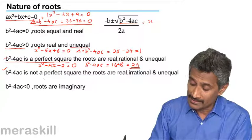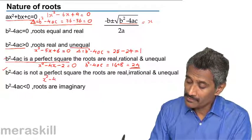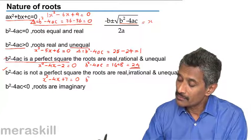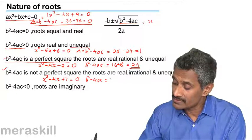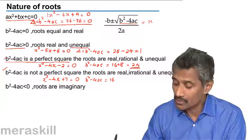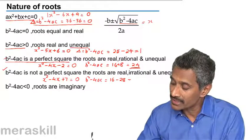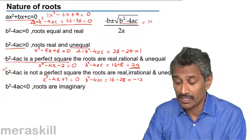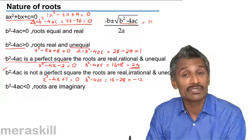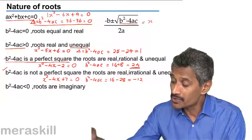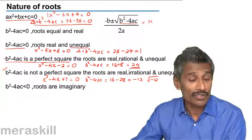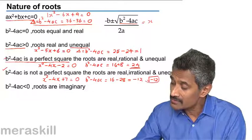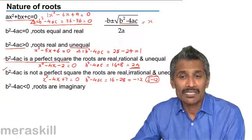Now suppose you have something like x squared minus 4x plus 7 equals 0. Here b squared minus 4ac would be minus 4 squared, that is 16, minus 4 into 1 into 7, which is minus 28, giving 16 minus 28, which equals minus 12. So here the discriminant is a negative number. In such a case you would get the square root of minus 12 in the formula. The square root of a negative number does not exist in the set of real numbers. So in such cases the roots will be complex or imaginary numbers.